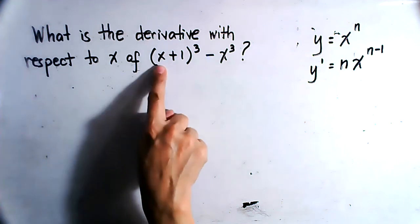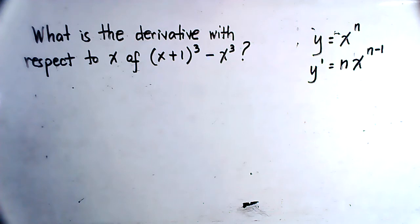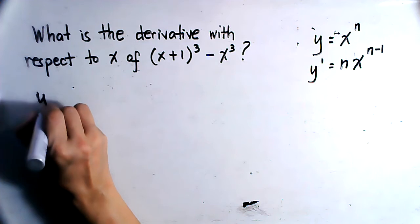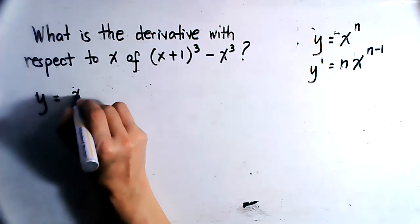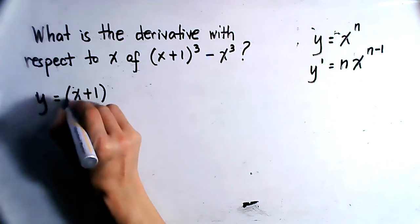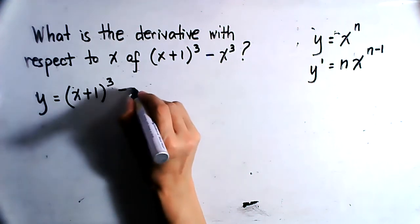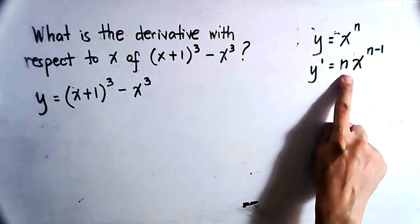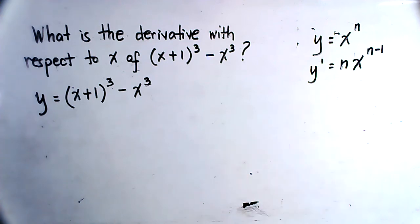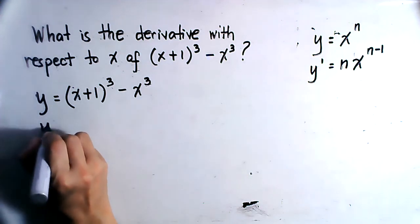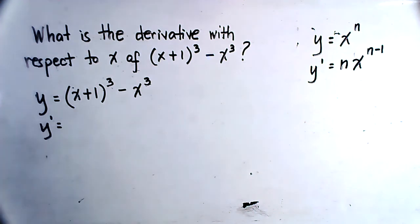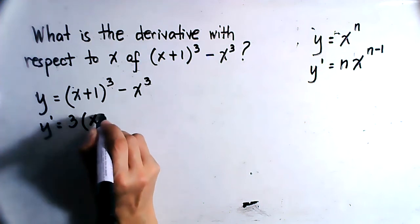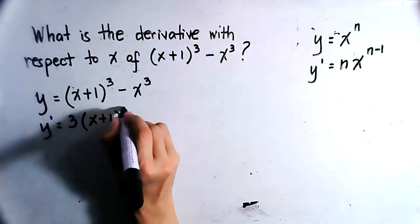We are going to find the derivative of (x plus 1) cubed minus x cubed. First we equate y equals (x plus 1) raised to the third power minus x raised to the third power. Using the formula, y prime will be equal to 3 times (x plus 1) raised to the second power minus 3 times x squared.